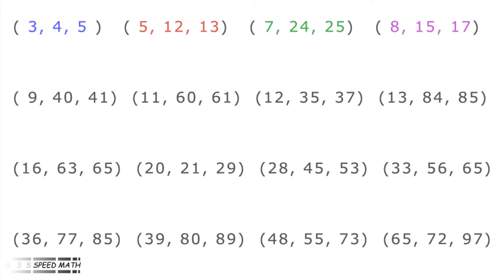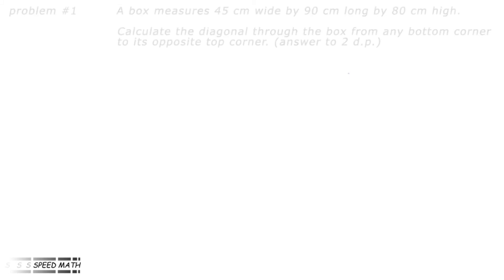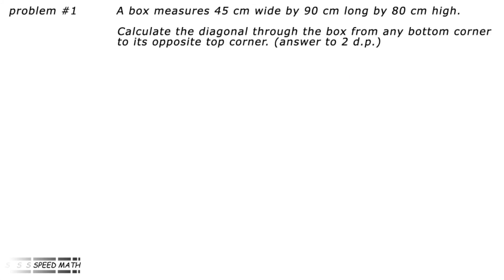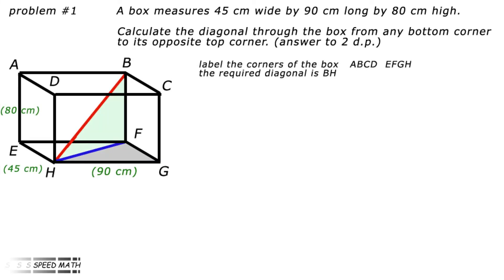And now to the problems. Problem number one. A box measures 45 centimetres wide by 90 centimetres long by 80 centimetres high. Calculate the diagonal through the box from any bottom corner to its opposite top corner. Answer to two decimal places. Label the corners of the box A, B, C, D, E, F, G, H. The required diagonal is BH.